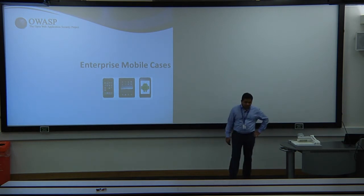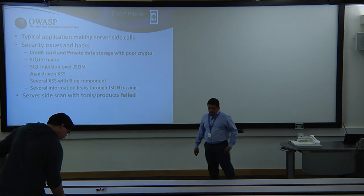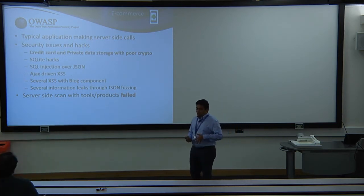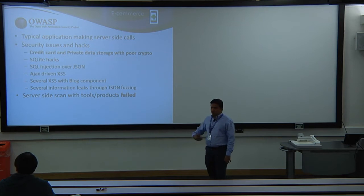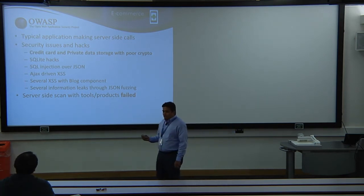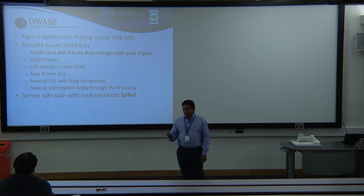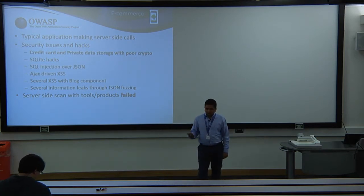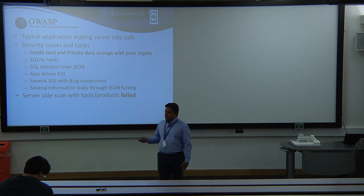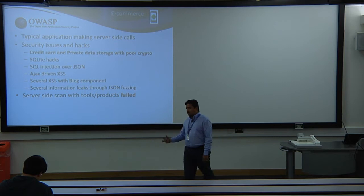Let's look at some enterprise cases on what we've been finding. This was a typical Android e-commerce application that allows users to perform transactions. We found that credit card and private data were stored in local storage, but they were encrypting the file. However, the encryption and decryption was happening on the client side, and the encryption key was part of the code. By decompiling the Android application, it was possible to get the encryption token and then access the stored files.